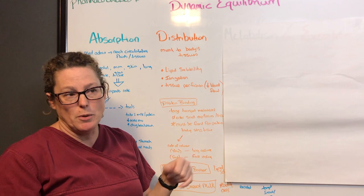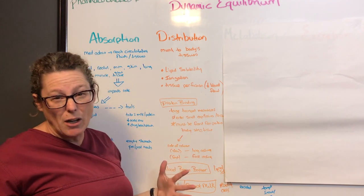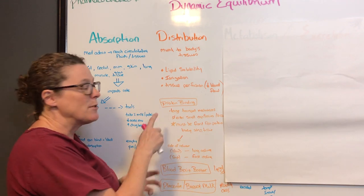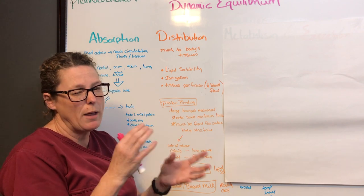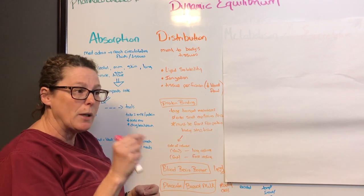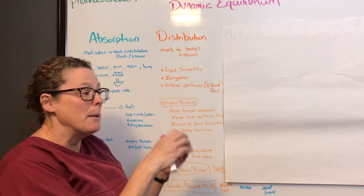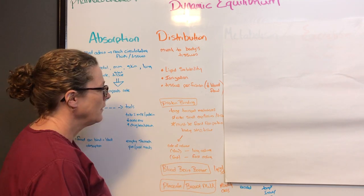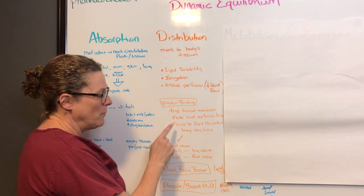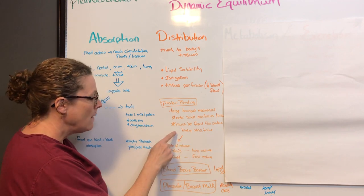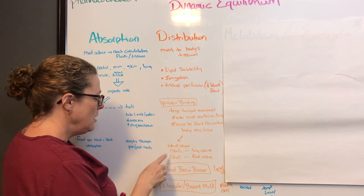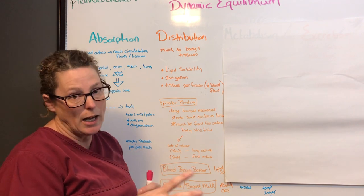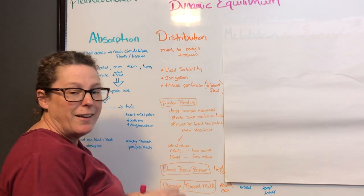Some drugs require proteins to bind to them — like a transport mechanism. If an Amazon package is too big to carry by itself, you grab a cart; consider that the protein binding to the medication molecule. This creates a larger transport that is not capable of crossing the blood-brain barrier or entering small capillaries. As it reaches its destination, the protein must unbind from the medication — like taking the package out of the cart to deliver it. The rate of release from protein binding is what gives us slow-acting and long-acting information: slow release equals long-acting, fast release equals fast-acting.